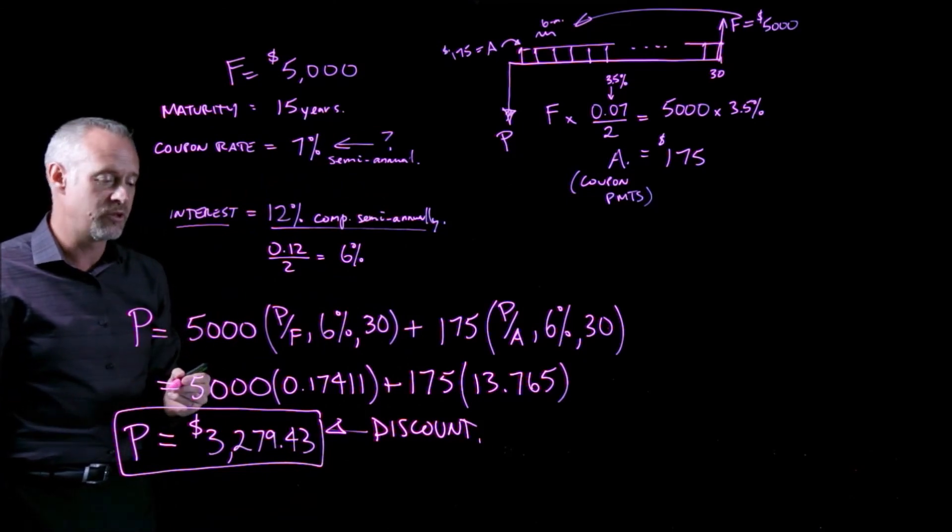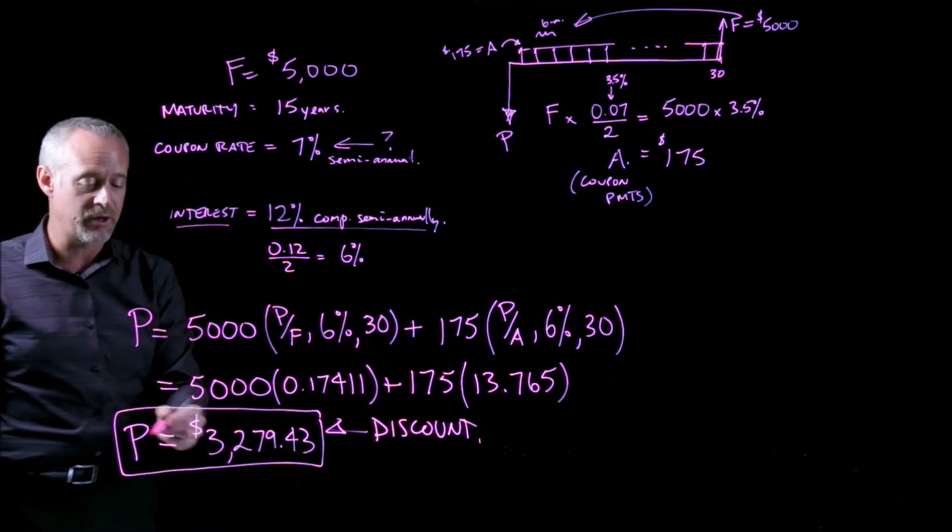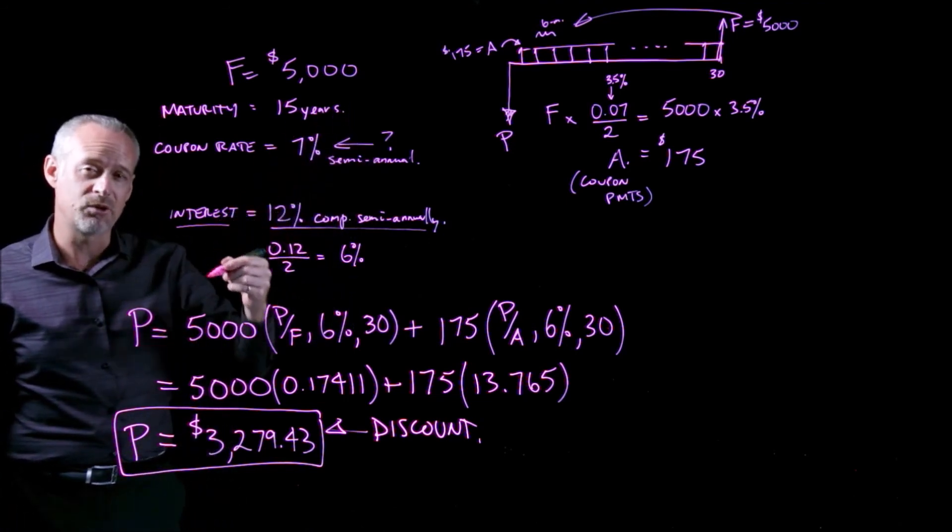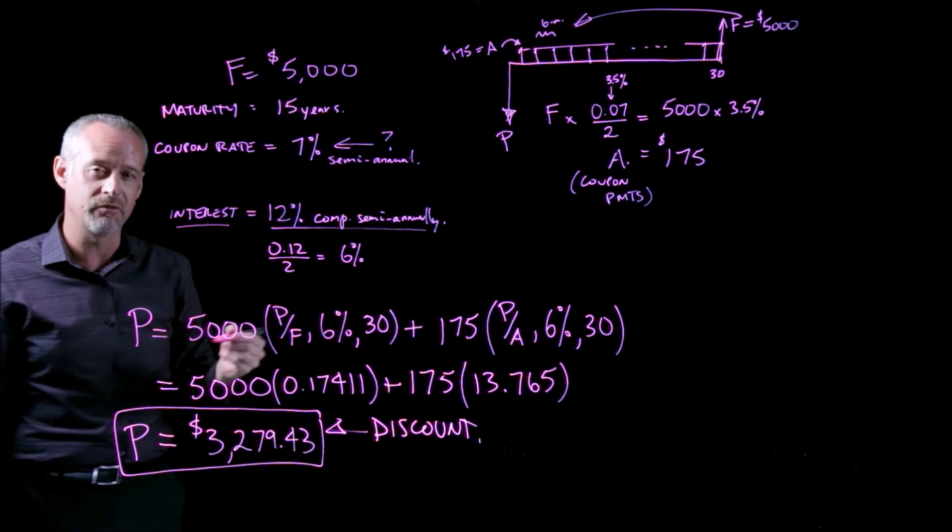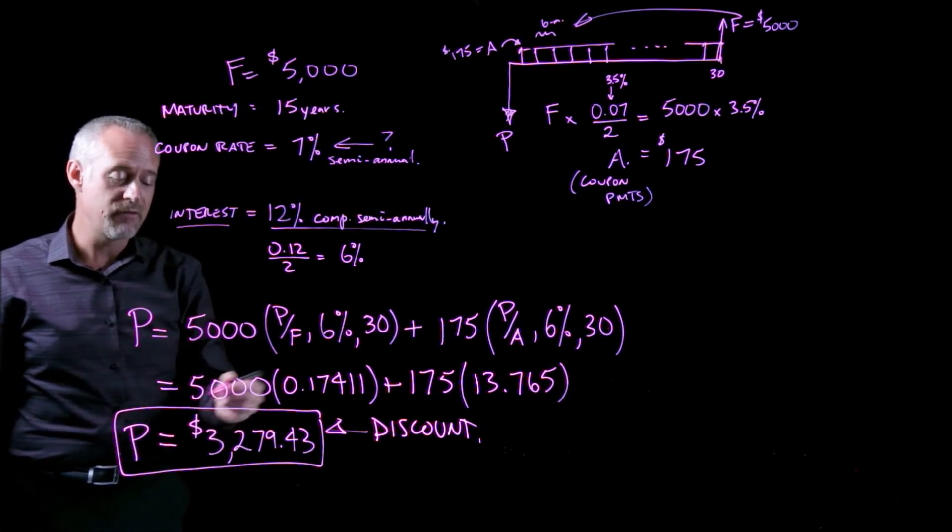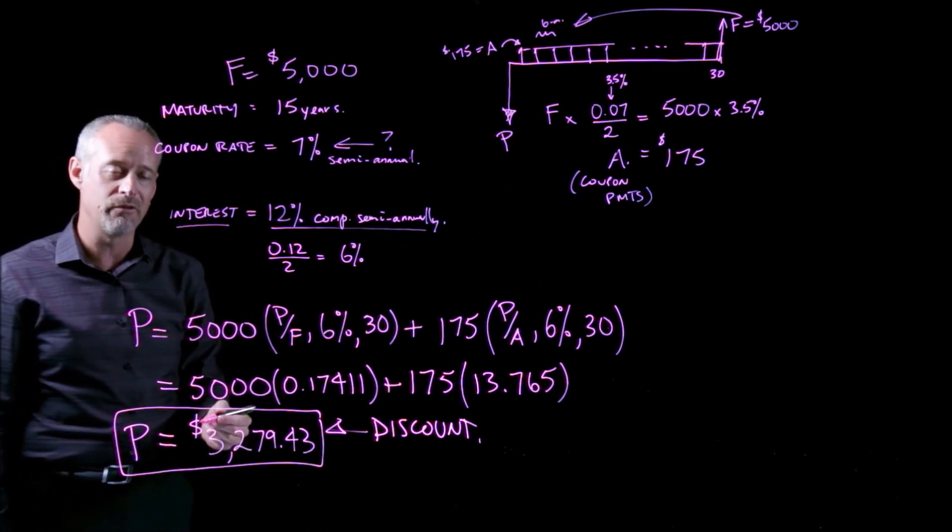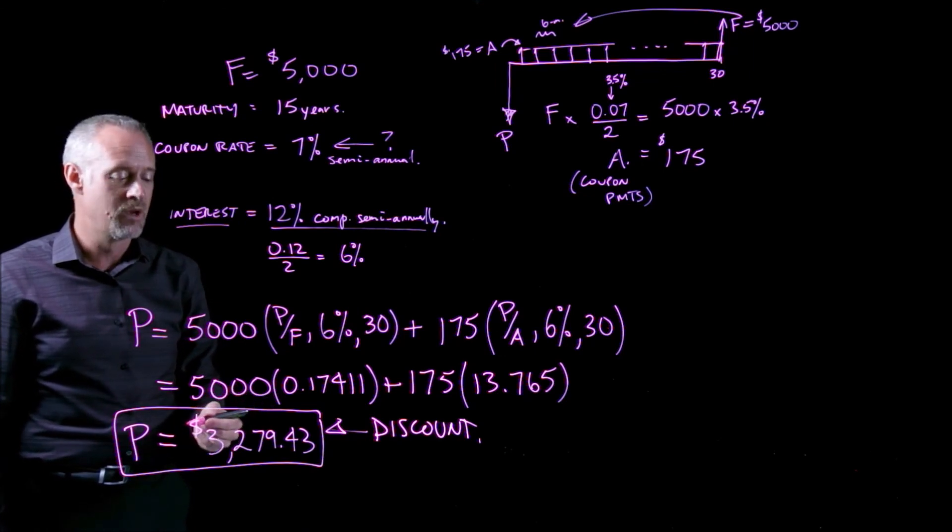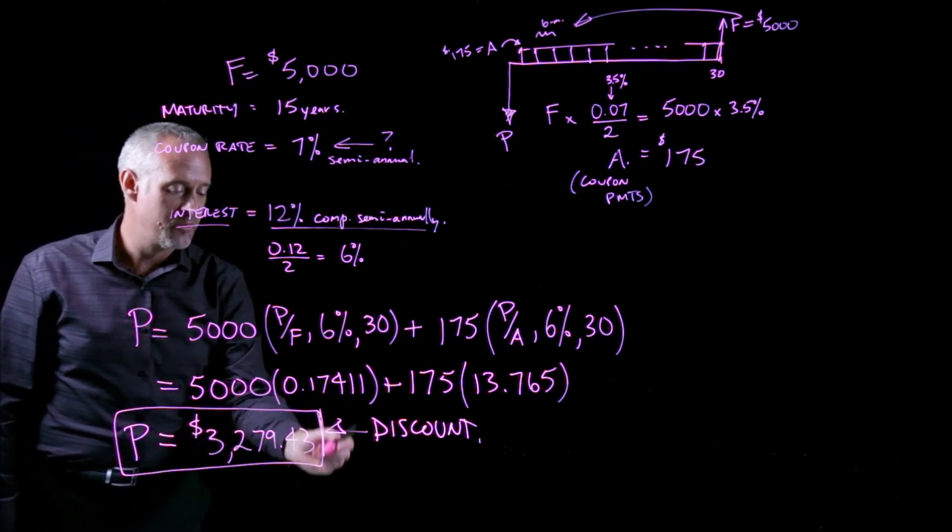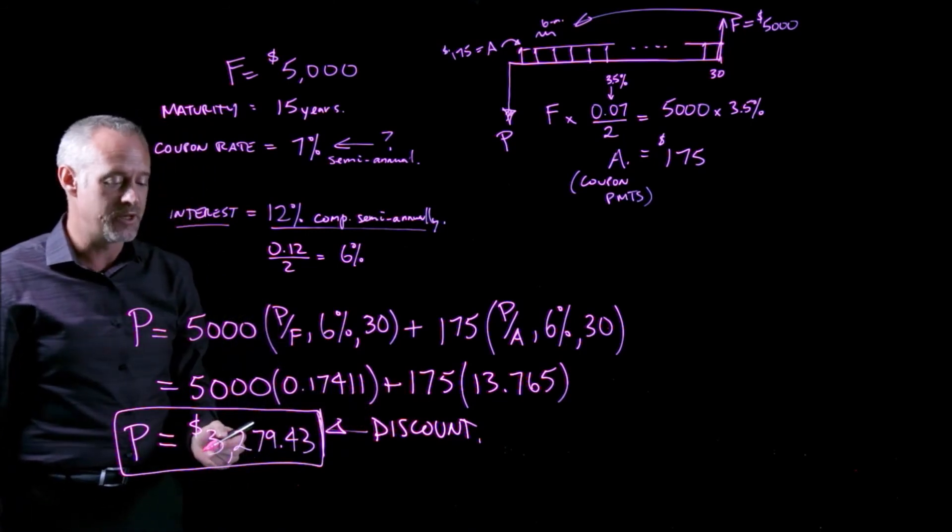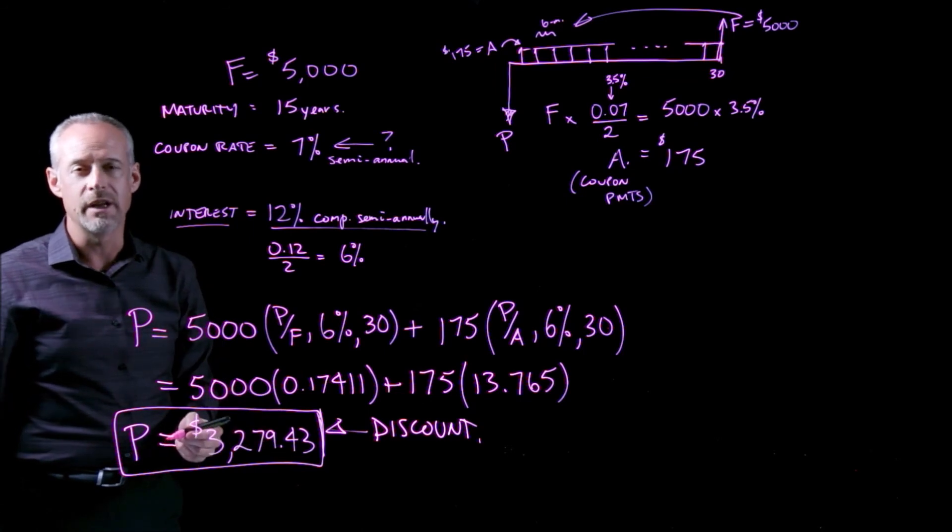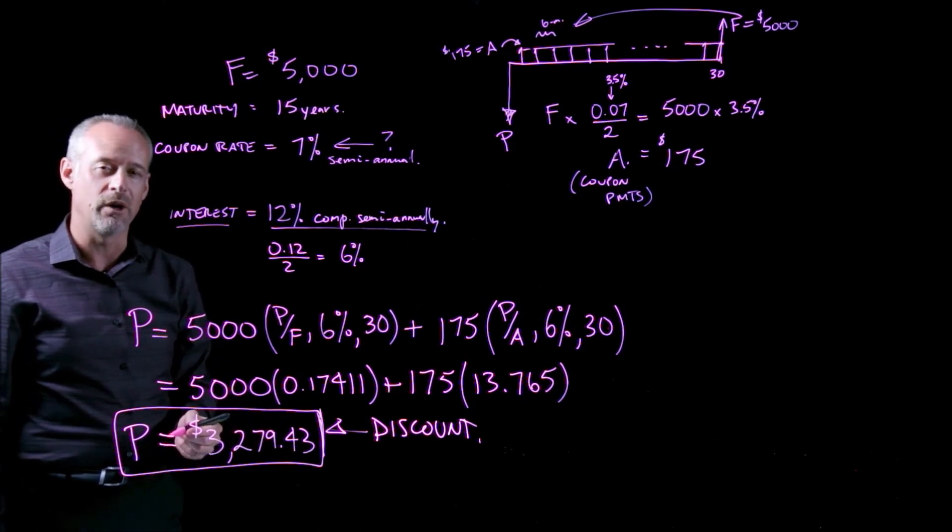The alternative can also be true, and that is we can calculate a P that's greater for, let's say, a very attractive coupon payment relative to the risk of the bond. If I calculate a P that's larger than the face value of the bond, we say the bond is trading at a premium. But for this particular problem, we determine the bond is trading at a discount, and we can determine that we're willing to pay $3,280 for this bond.